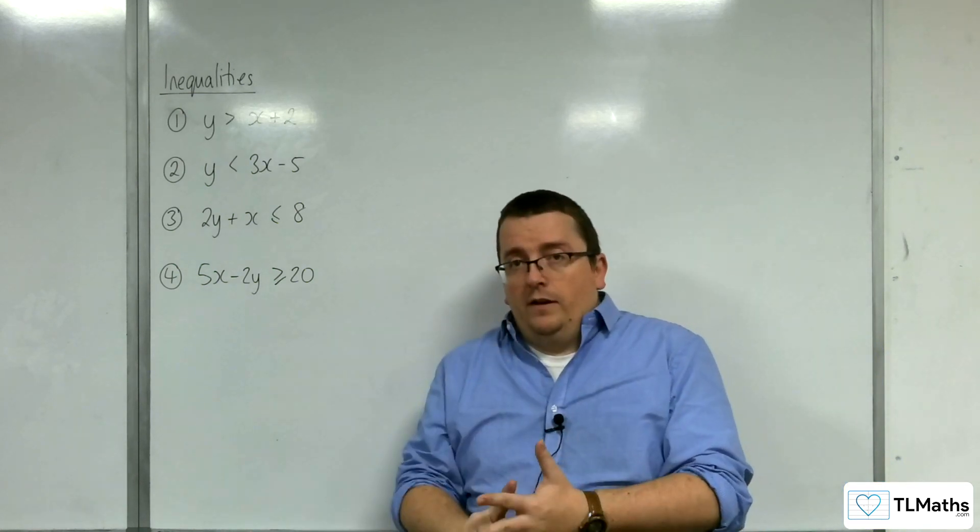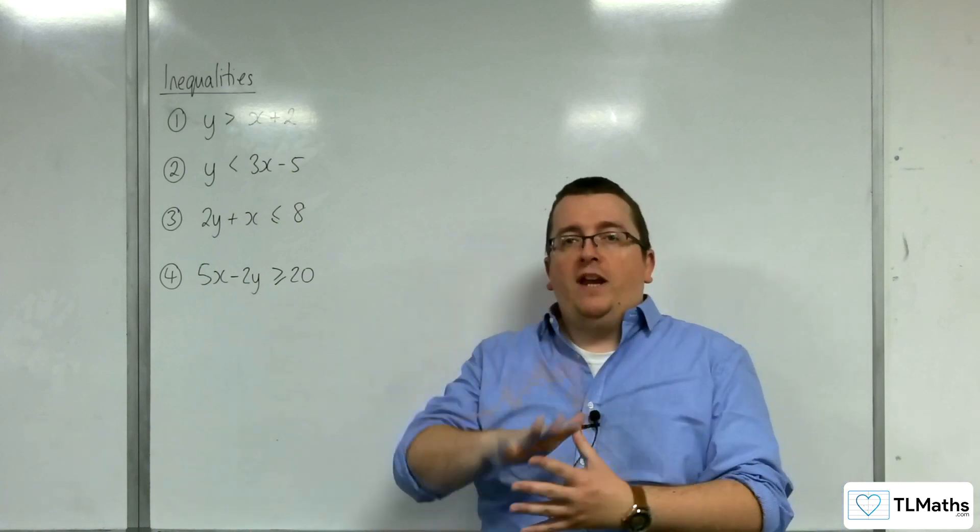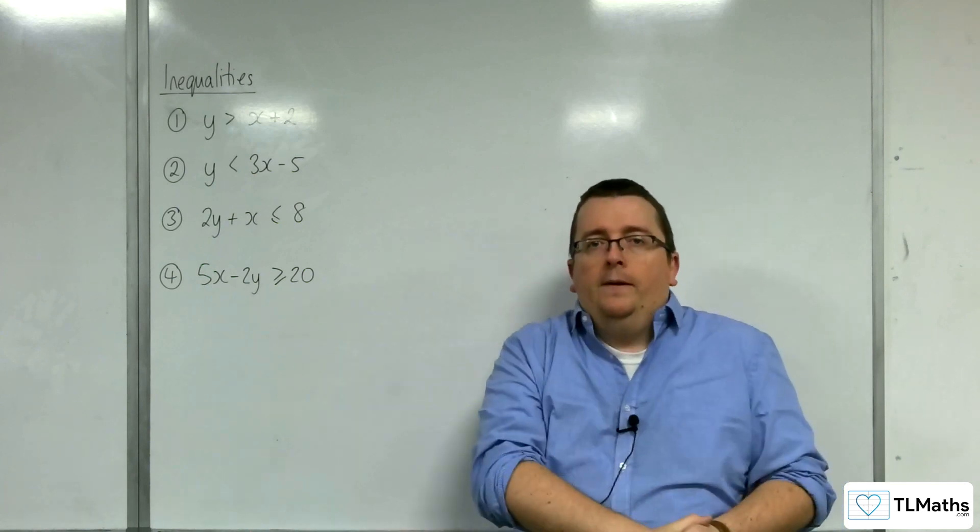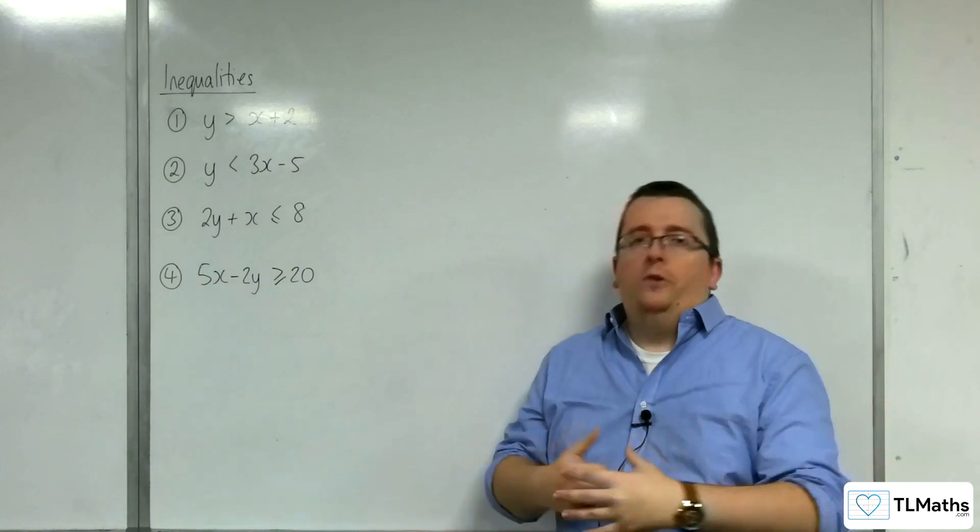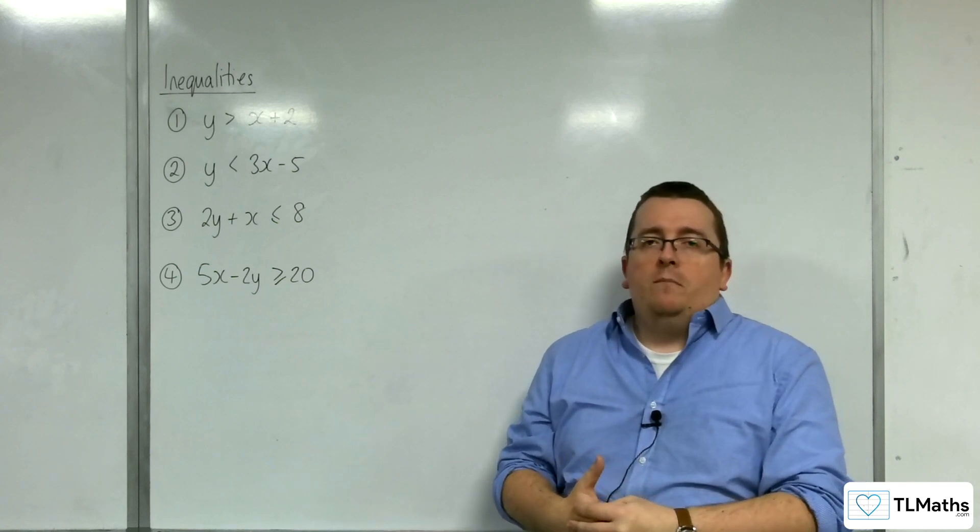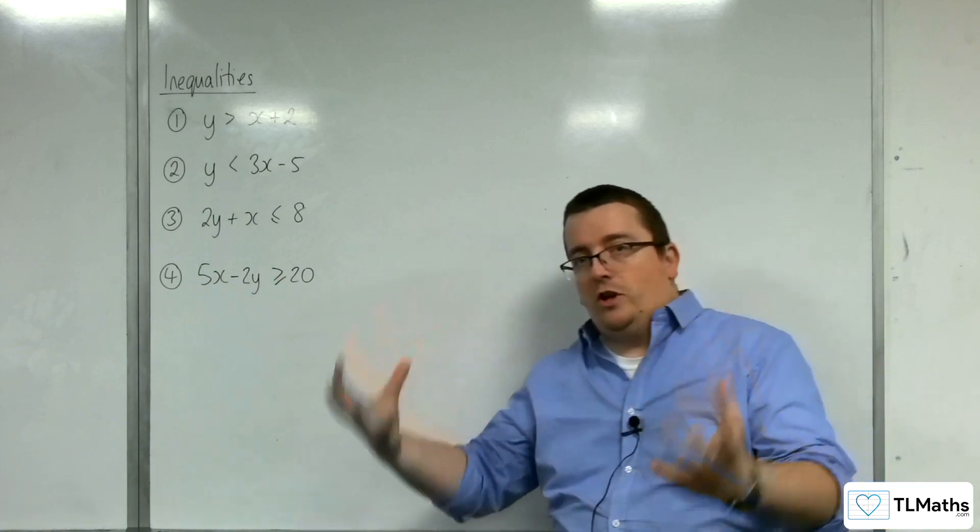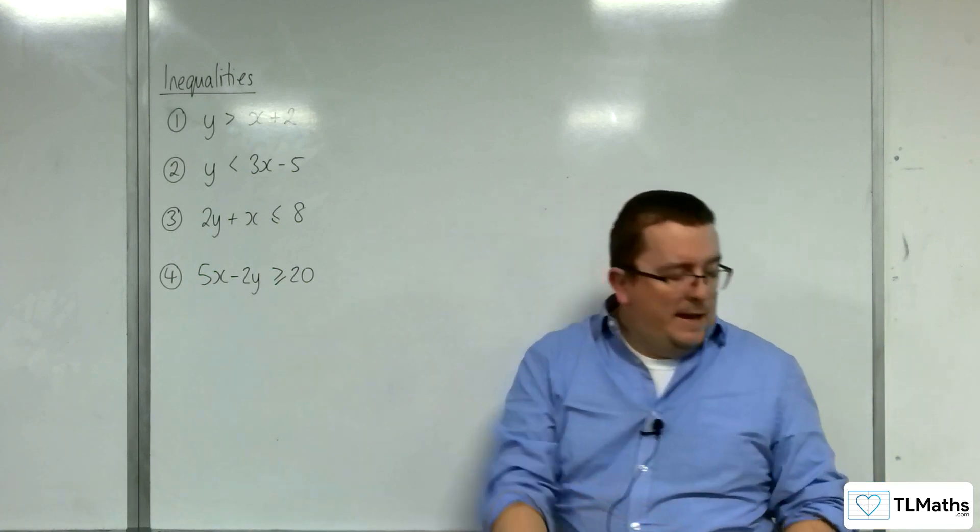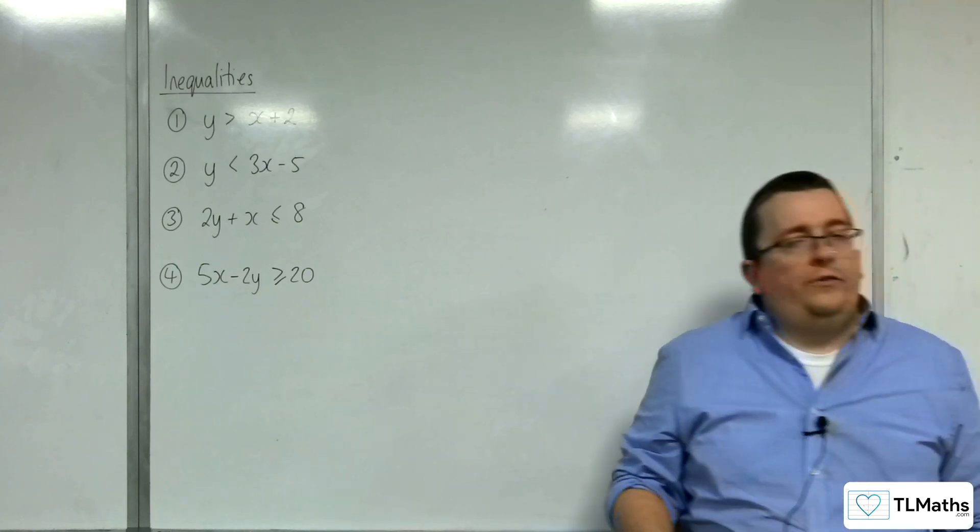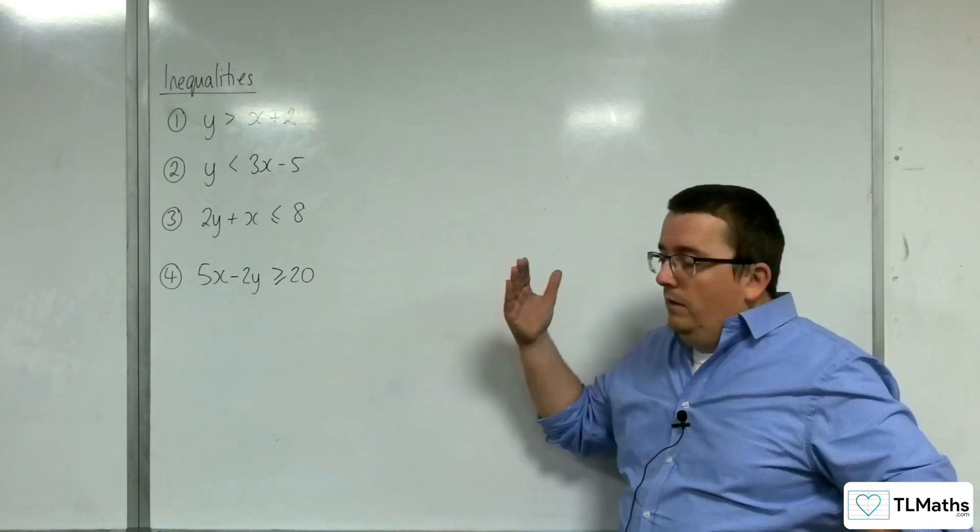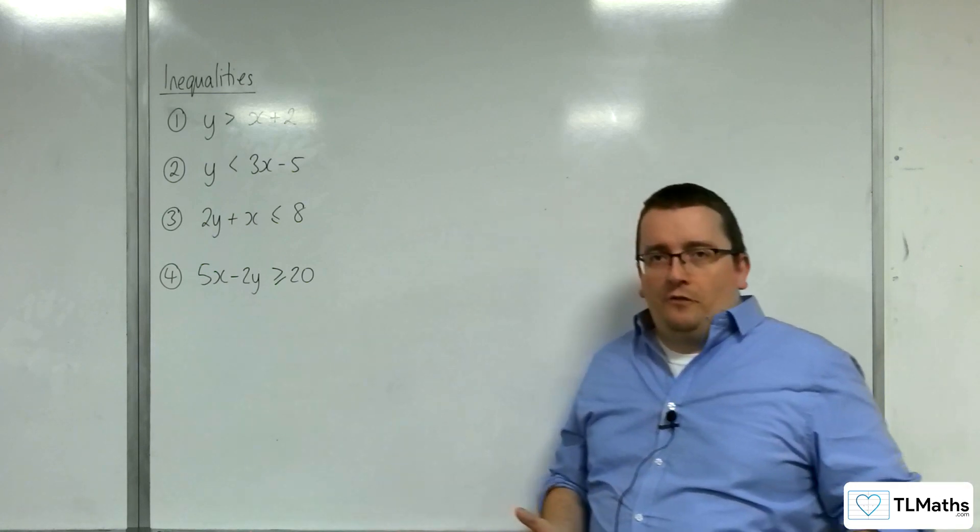Either you identify the region you don't want by shading in the region you don't want, and then labeling this is the region I want. Or the question might say shade the region identified by this inequality, in which case you need to shade the region that you do want. And that obviously causes a little bit of confusion. So, effectively, do what the exam question says is my best advice.